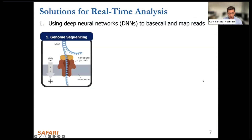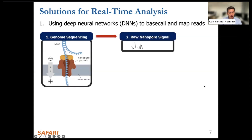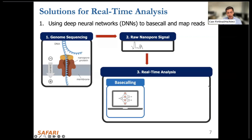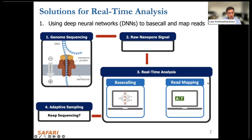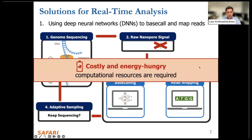There are usually two solutions for real-time analysis using nanopore sequencing. The first is to use deep neural networks to basecall the reads while they are being generated and then map them. We may generate a signal in real-time, basecall it, generate its corresponding sequence, and then map that read to its reference genome to decide whether to keep sequencing it. However, DNN-based tools are usually costly and energy hungry. The second solution is to map signals without basecalling them — performing direct analysis on the signals themselves, including mapping signals to reference genomes and making adaptive sampling decisions. The issue with these tools is they are either low throughput or provide inaccurate analysis for large genomes.